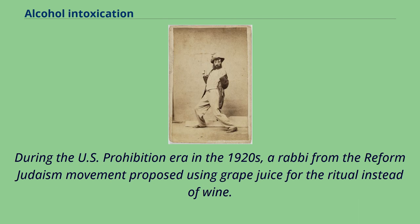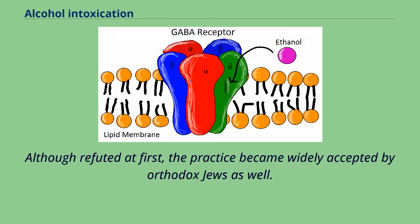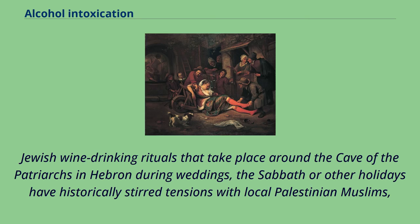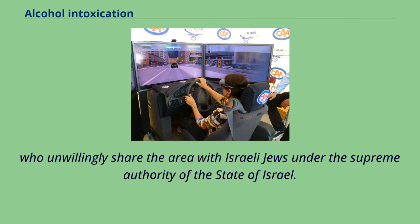During the U.S. Prohibition era in the 1920s, a rabbi from the Reform Judaism movement proposed using grape juice for the ritual instead of wine. Although refuted at first, the practice became widely accepted by Orthodox Jews as well. Jewish wine drinking rituals that take place around the cave of the patriarchs in Hebron during weddings, the Sabbath or other holidays have historically stirred tensions with local Palestinian Muslims, who unwillingly share the area with Israeli Jews under the supreme authority of the State of Israel.